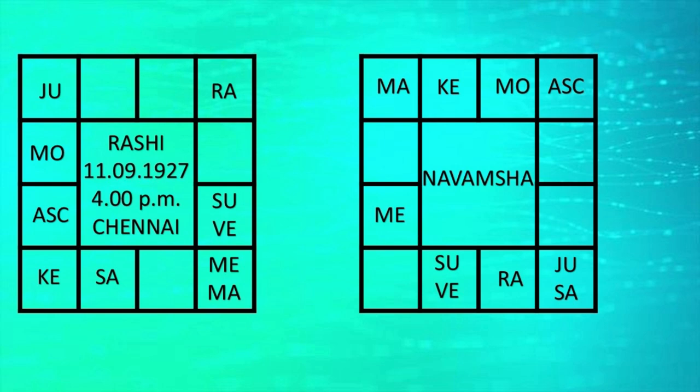Looking at the sixth house, I always reiterate that Rahu and Ketu should be in the sixth-twelfth axis. So Rahu is alone there, giving a life where there are no enemies, no deaths, no diseases. His life is without enemies, without deaths, without diseases.